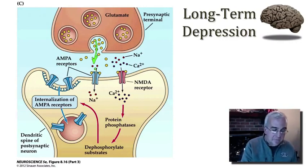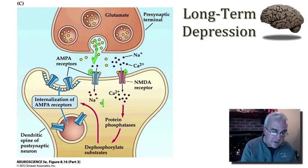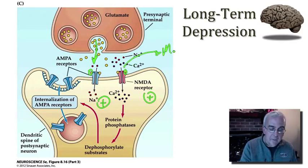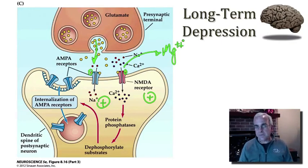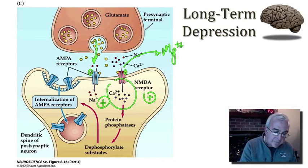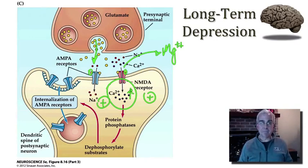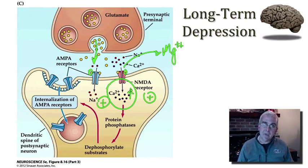Glutamate binds to AMPA receptors and NMDA receptors. The amount of depolarization that the low-frequency stimulation provides this post-synaptic spine is sufficient to expel magnesium from the pore of the NMDA receptor channel. However, the amount of depolarization that leads to depression is not so great that we have a rapid, high-level increase in post-synaptic calcium. Rather, the amount of calcium that rises within the spine is relatively modest — a slower, lower-level increase in post-synaptic calcium. That is critical.